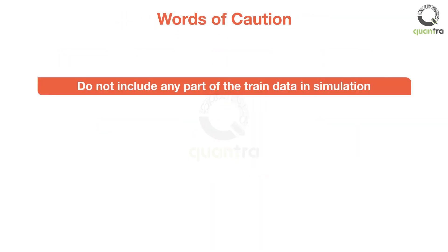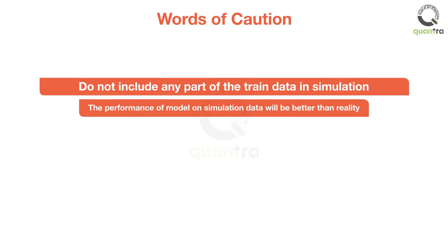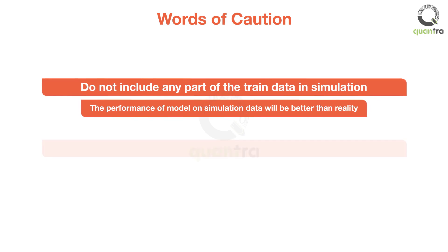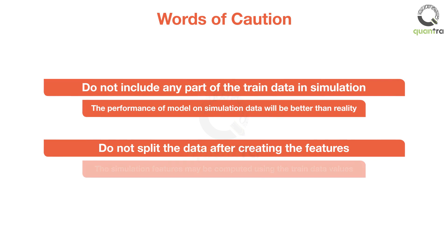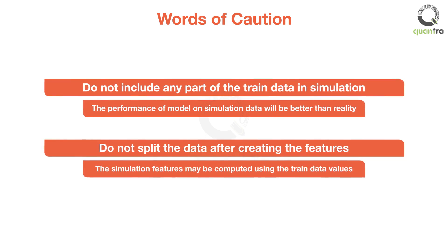When you perform a simulation, you have to be careful not to include any part of the train data in the simulation. This will lead to a very good performance during the simulation, which will not be replicated on new data during real trading. Also, make sure you do not split your data into train and simulation after creating the features, as this might result in some feature data being computed using the train data values.